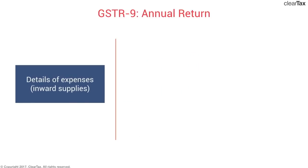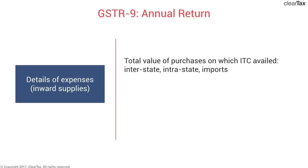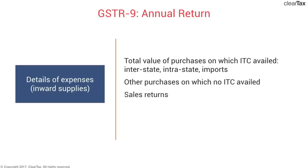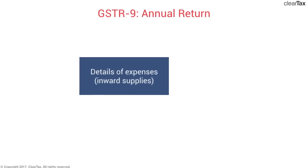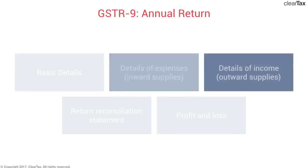The second category is details of expenses. You'll have to fill in the total value of purchases on which input tax credit has been availed, split for interstate, intrastate, and imports. Next, any other purchases on which input tax credit has not been availed. You'll also need to net off sales returns on your purchases, and mention any other expenses other than purchases — all expenses that form part of your expense side in your P&L — across these four categories.